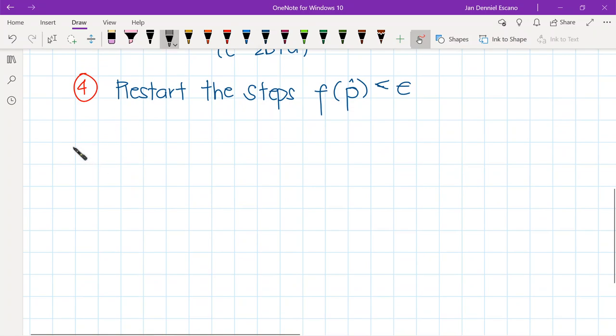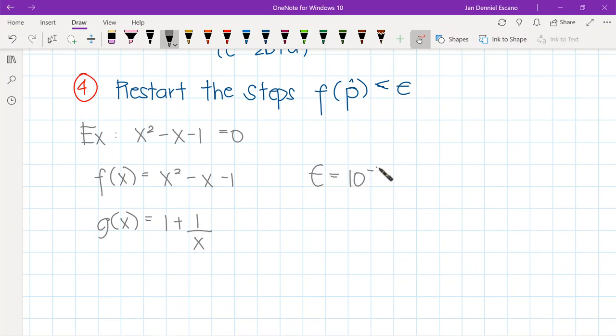If we are given an example of equation, say x squared minus x minus 1 is equal to 0, we know that our g of x here, or let's say we solve for the equation, so we have f of x that is x squared minus x minus 1. From our previous discussion, we said that g of x is 1 plus 1 over x. And it's given here that we should round this to the nearest six decimal places, and let's set our starting point to 2.